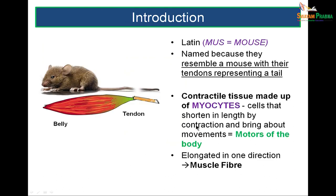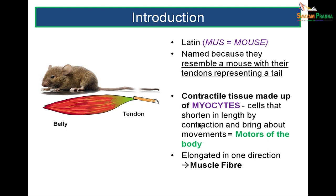What is muscle? In Latin, 'mus' means a mouse. Muscles resemble a mouse, with the belly being the body and the tail of the mouse being the tendon. It is a contractile tissue made up of cells called myocytes, and these cells shorten by contraction. They are lengthened in one direction, wherein they are called muscle fibers.